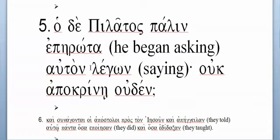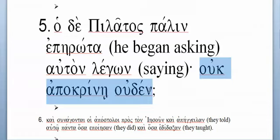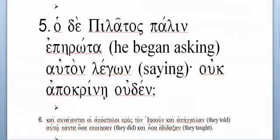And then he gives you λέγων — 'saying' — which is technically a present participle, but you don't need to know that yet. So: 'Pilate began asking him, saying,' and then you have the contents of the quotation, because he gives you the quotation mark there. And it's something that's negated as well.